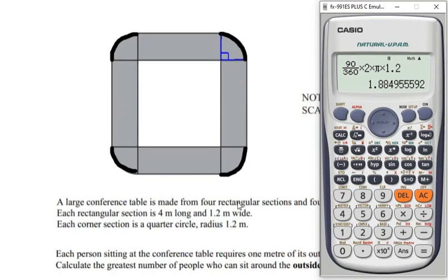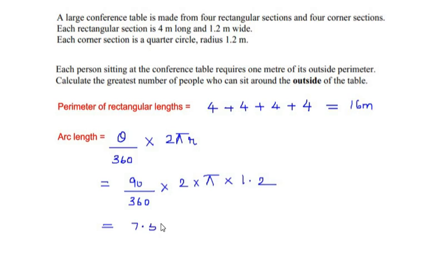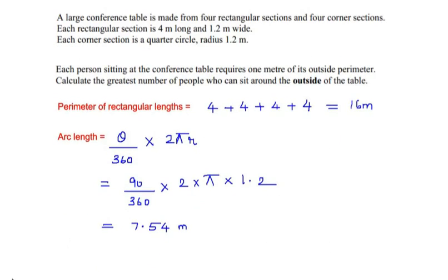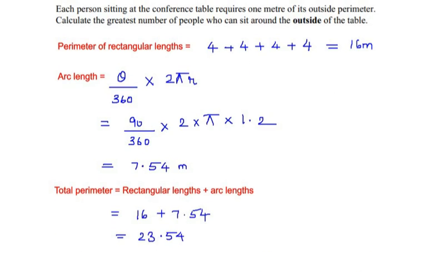Since we have four corners, we multiply by 4: 1.8849 × 4 = 7.5398, which rounds to 7.54 meters to three significant figures. Adding the rectangular perimeter and the arc length of the four corners: total perimeter = 16 + 7.54 = 23.54 meters.